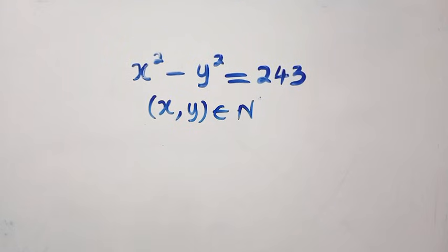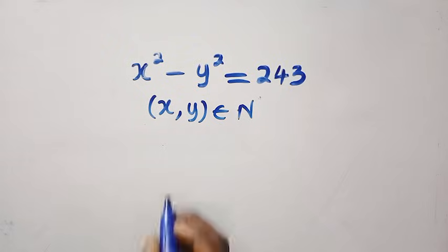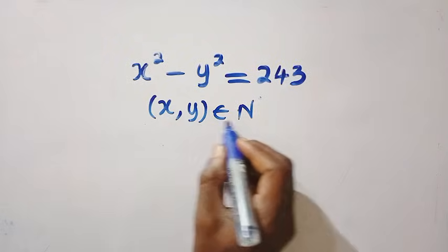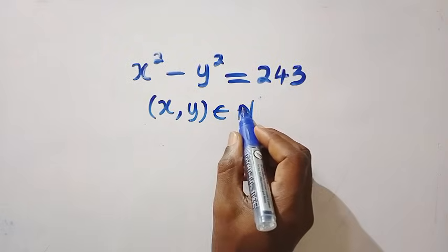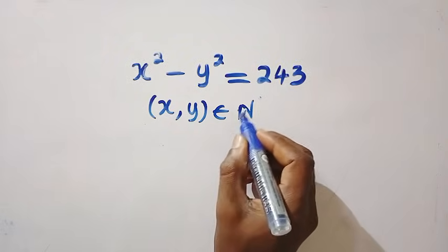Good day viewers, you are welcome. How to solve these nice algebraic equations in Maths Olympiad. We have x squared minus y squared equals 243, and x and y are members of the natural numbers.